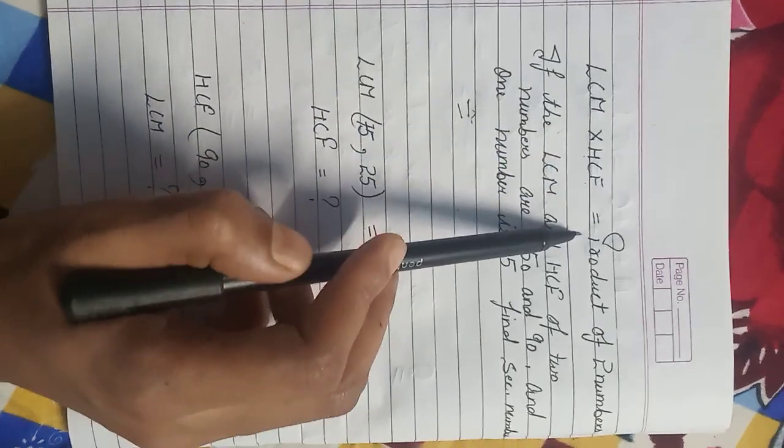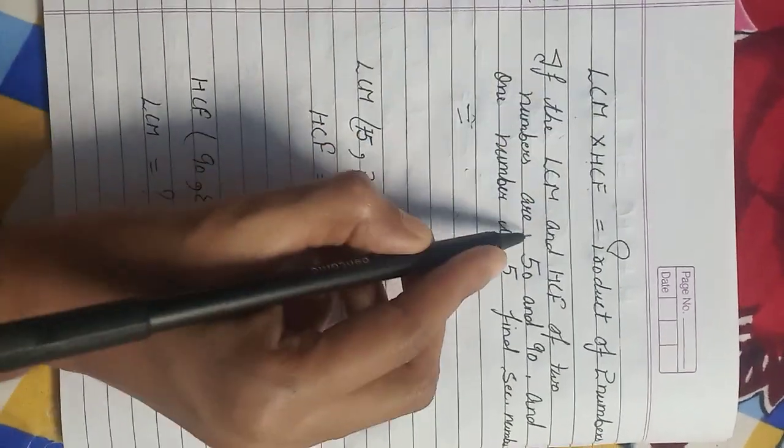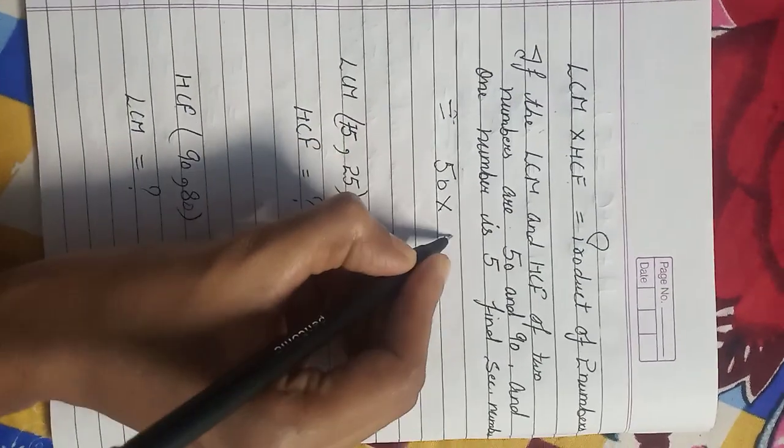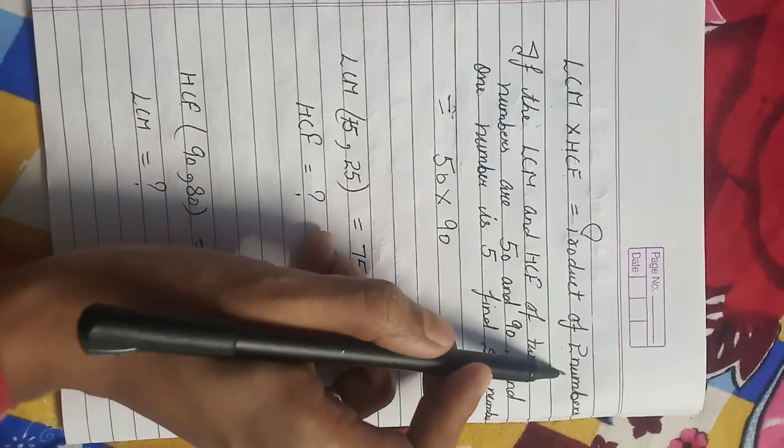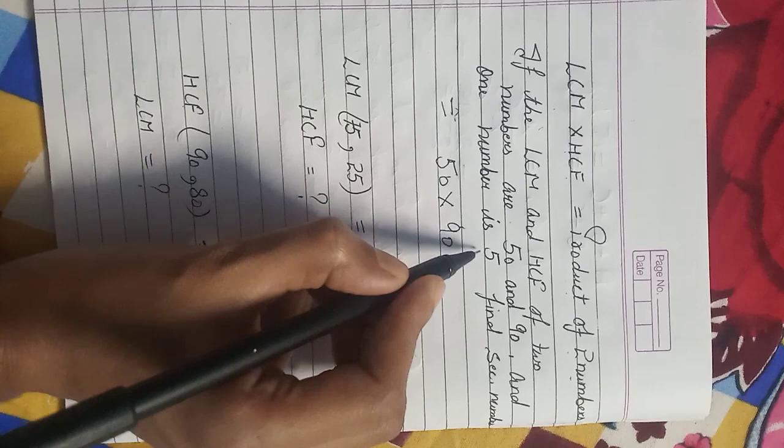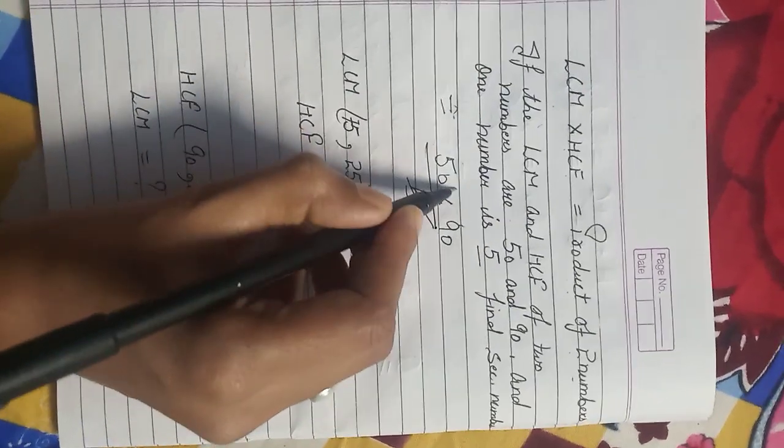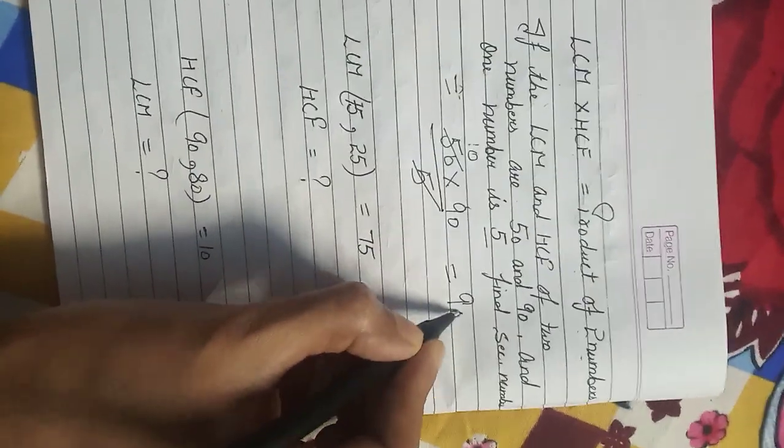LCM into HCF is equal to product of 2 numbers. So LCM is 50, HCF is 90. Product of 2 numbers - one number is 5. So we will divide by 5. 50 and 90, when we multiply by 10, the answer is 900.